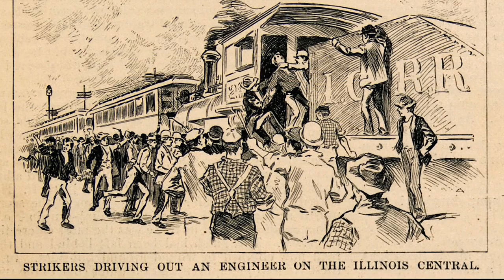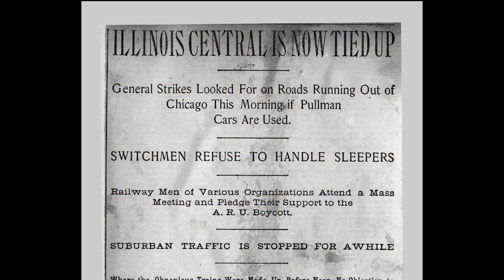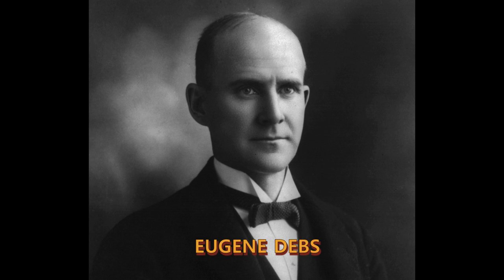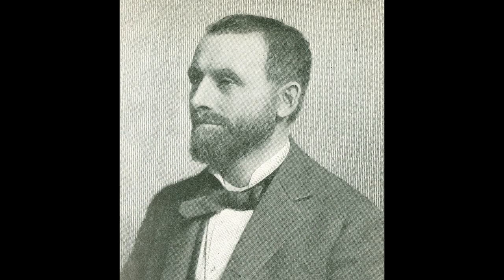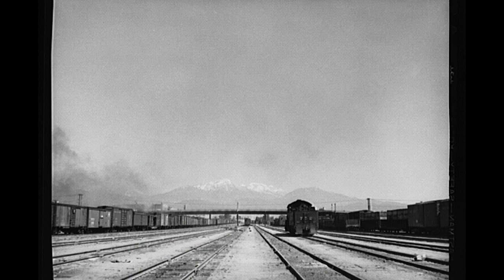Together they launched a nationwide boycott of any train that included Pullman's cars. Much of the rail traffic west of Chicago soon ground to a halt. While Debs consistently spoke against violence, the railroad owners did not want a prolonged peaceful strike. With Illinois Governor Altgeld sympathetic to the workers, the railroad companies wanted federal troops to use force to get the trains moving again.